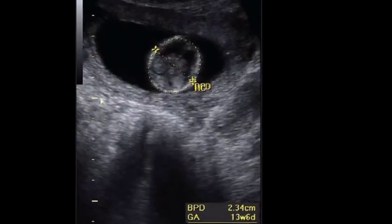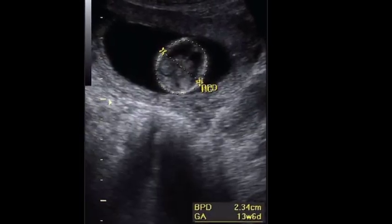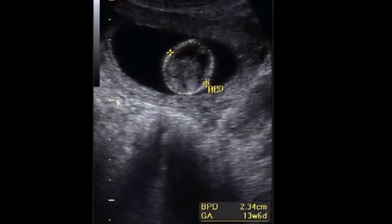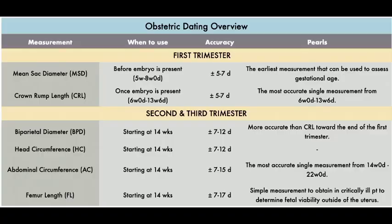The biparietal diameter should be measured as early as possible after 13 weeks for dating. Biparietal diameter has been shown to be accurate in predicting gestational age from 14 to 20 weeks. The variability increases after this time.